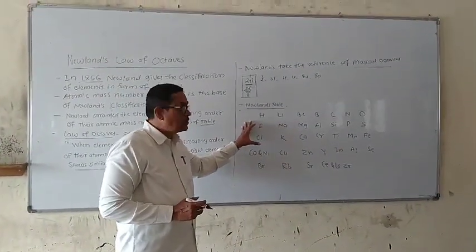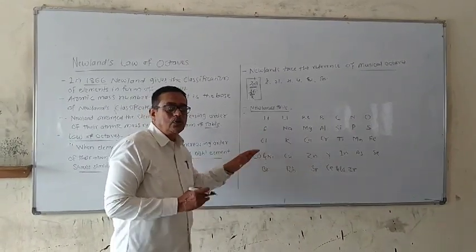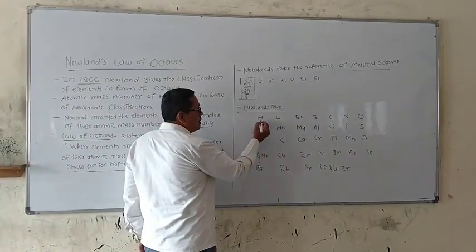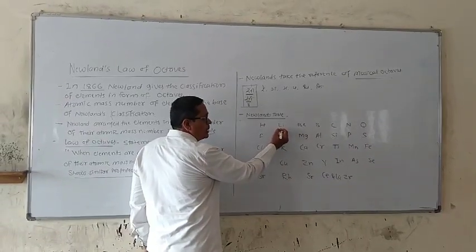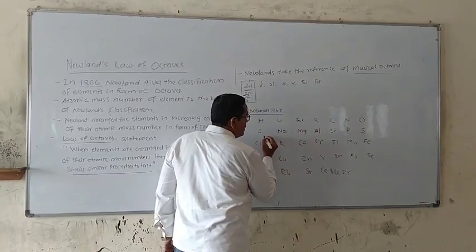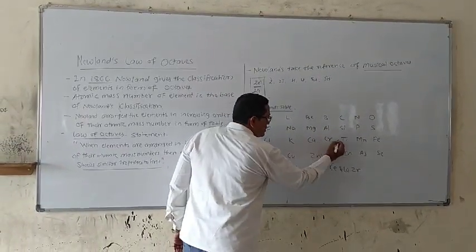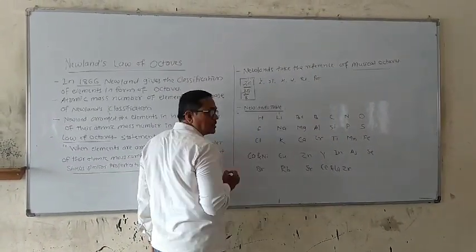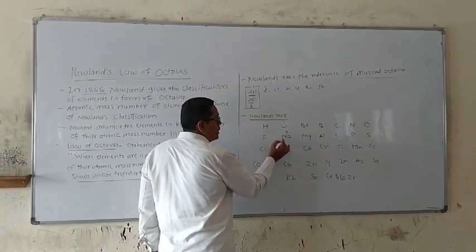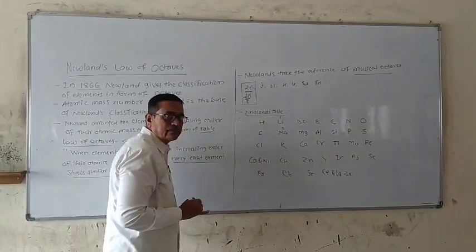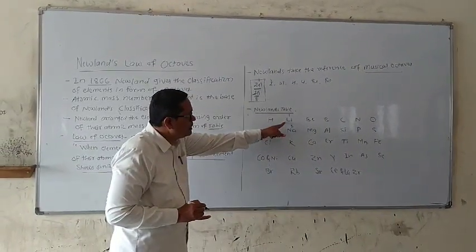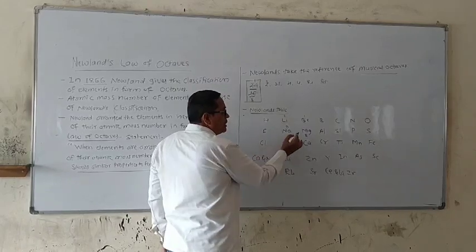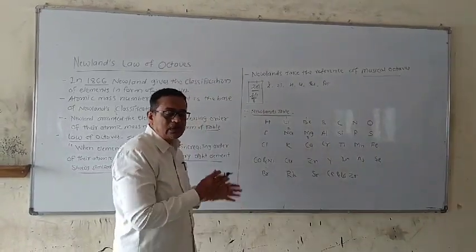We verify the Law of Octaves using this table of known elements arranged by Newland. The atomic mass of hydrogen is 1, lithium is 6.9, and elements are arranged in increasing order of atomic mass number. Lithium is at the first position and sodium at the eighth position — sodium shows similar properties to lithium. Similarly, beryllium at first and magnesium at eighth — magnesium shows similar properties to beryllium.